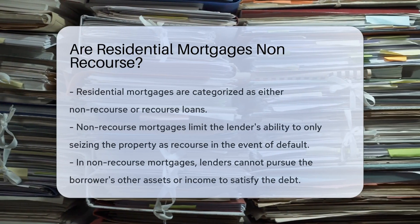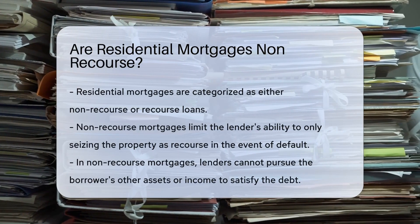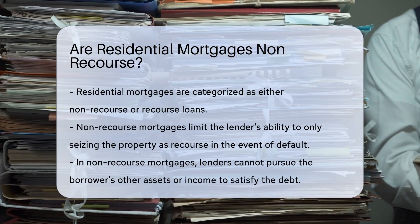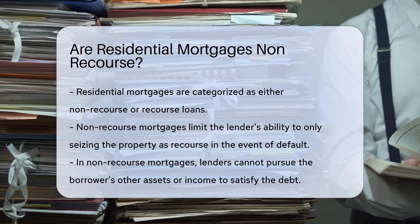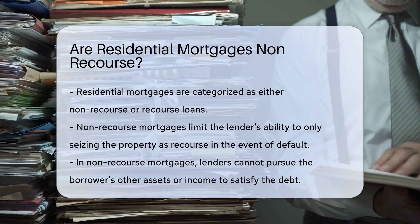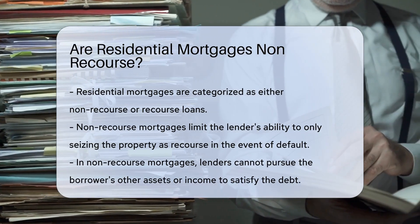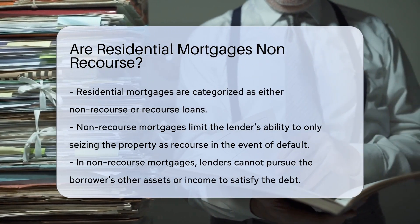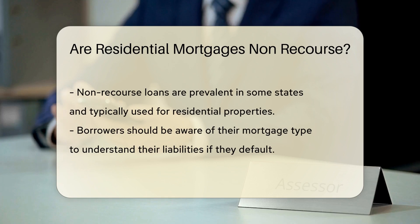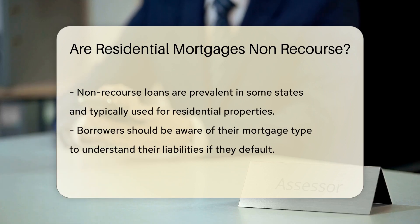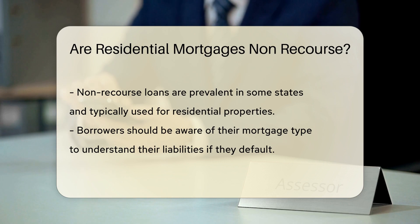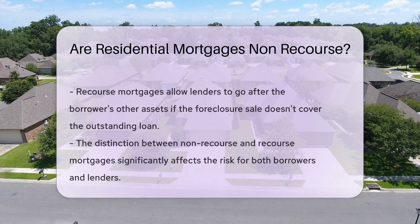Residential mortgages can be classified as either non-recourse or recourse loans. In a non-recourse mortgage, the lender's only recourse in the event of default is to seize the property securing the loan. This means the lender cannot pursue the borrower's other assets or income to satisfy the debt. Non-recourse mortgages are common in some states and are often used for residential properties. It's essential for borrowers to understand the type of mortgage they are entering into, to know their liability in case of default.